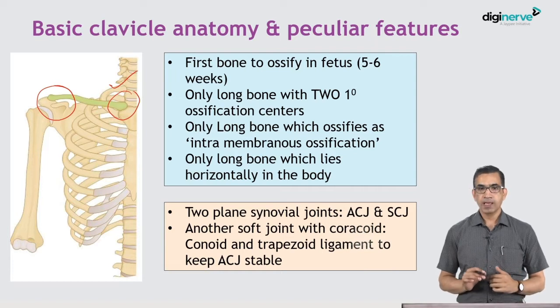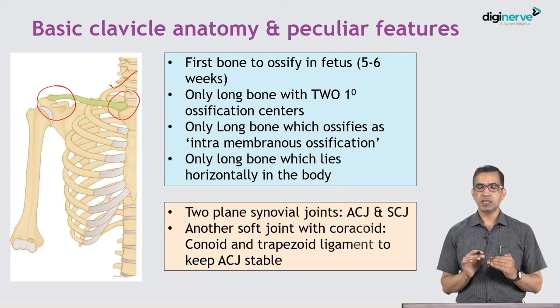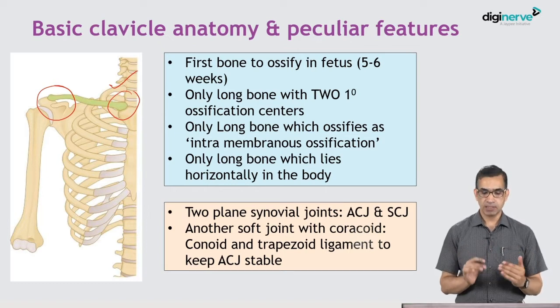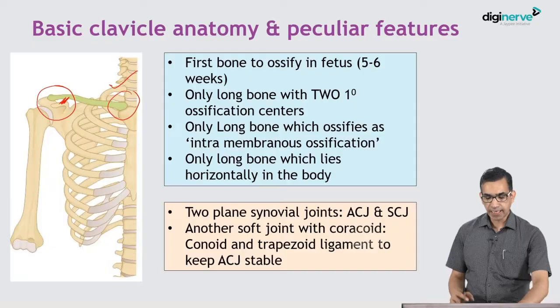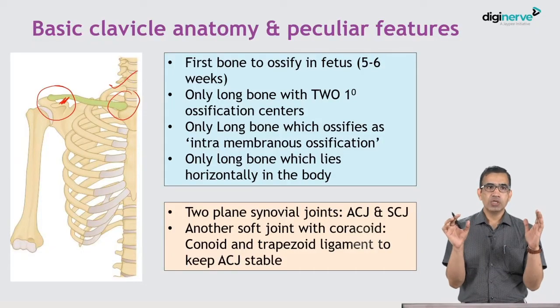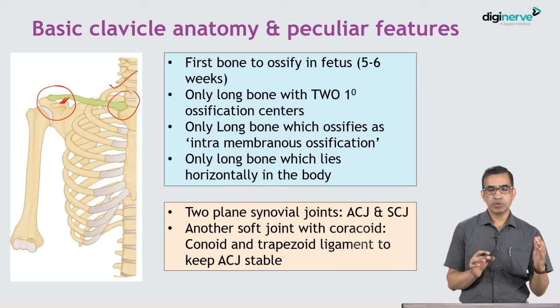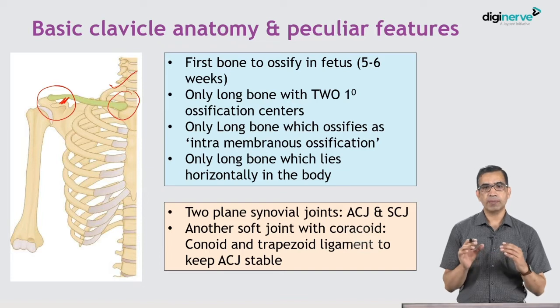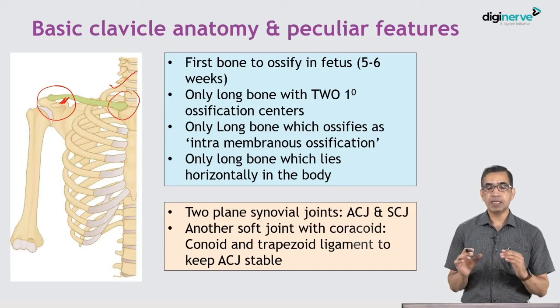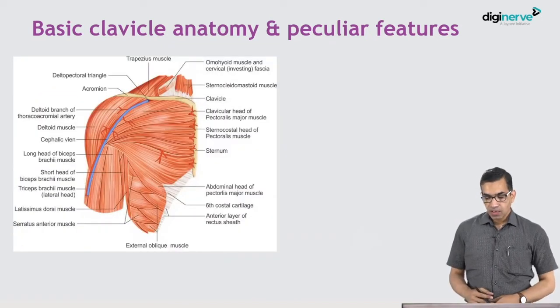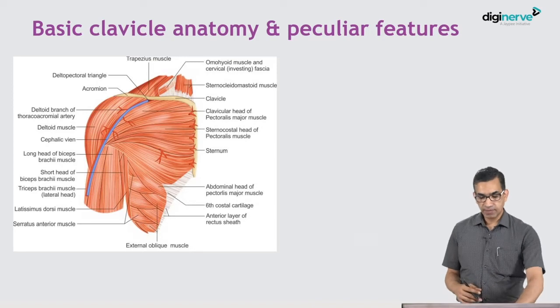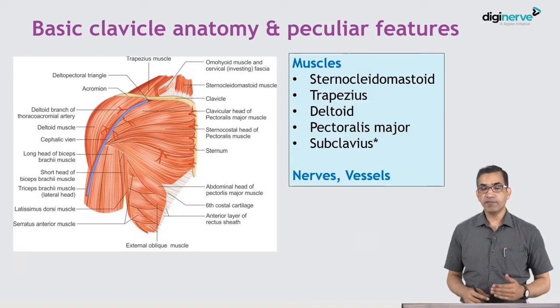But there is one more soft joint — soft joint means there is no joint per se, but there are ligaments — and that is between the acromion and the coracoid process. These are the coracoclavicular ligaments; there are two of them: trapezoid and conoid. All three joints — the sternoclavicular joint, acromioclavicular joint, and the soft joint of the coracoclavicular ligament — keep the clavicle stable and connected to the torso as well as to the scapula.